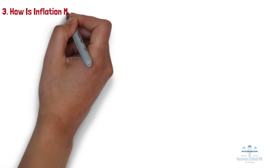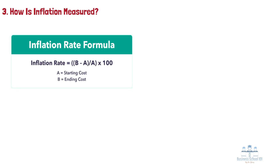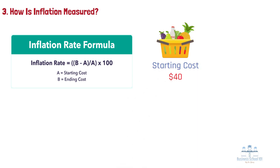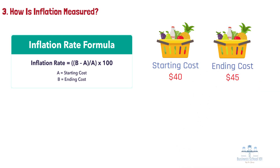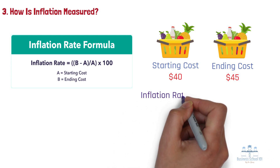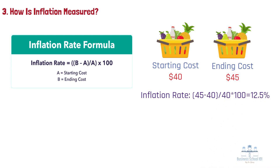Section 3: How is inflation measured? The basic formula to calculate the inflation rate is as follows. For example, at the beginning of the year, the price of a basket of groceries costs you $40. At the end of that same year, to buy the exactly same basket of groceries, you need to pay $45. So according to the formula, the inflation rate for the year should be 45 minus 40, then divided by 40 and times 100, ending with 12.5%. The U.S. inflation rate is typically measured by the CPI and PCE indexes.